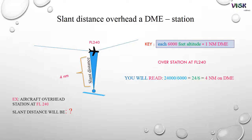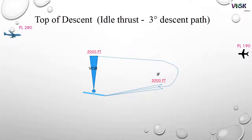So slant distance equals 4 nautical miles. Like we know, the slant distance when we fly flight level 240 equals 4, because the rule, the thumb rule is top of descent, idle thrust, 3 degrees descent path.